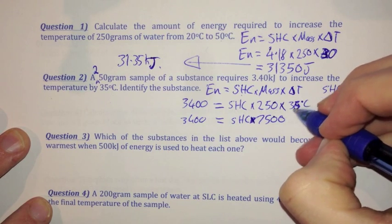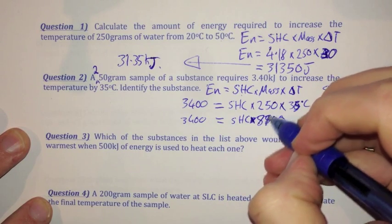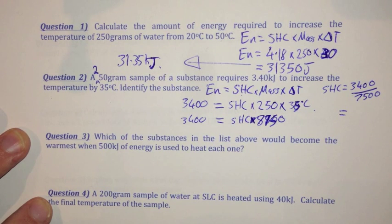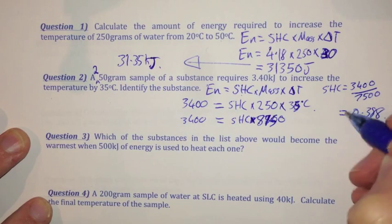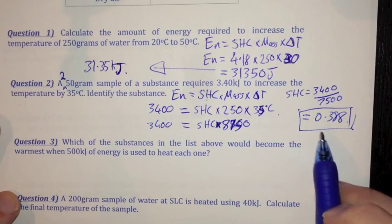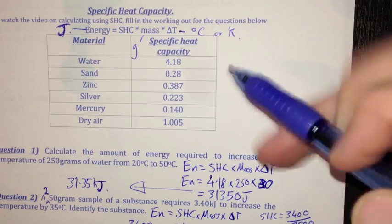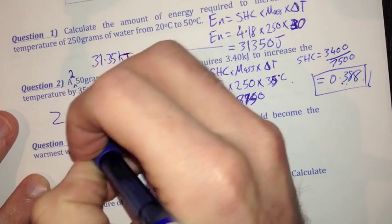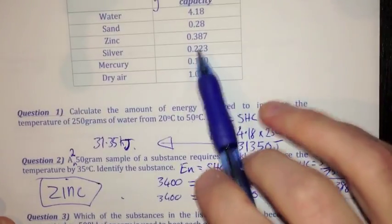That should be 35 degrees — and so that should be 8,750. Thus my answer will be 0.388. That is my specific heat capacity. I can use this to identify what the substance is from my list. Specific heat capacity of 0.388 corresponds to zinc. So my substance is zinc — that's using the specific heat capacity equation to find out what the substance actually is.